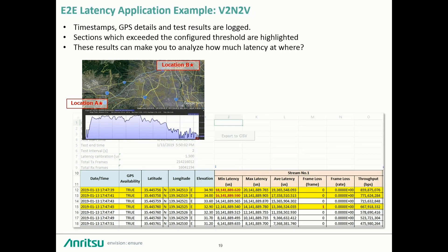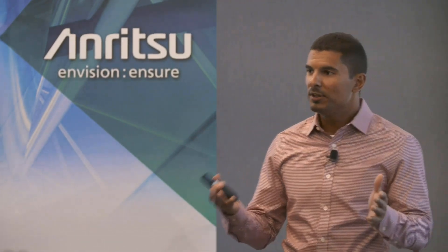As they drove from location A to location B, using our tester we were able to take the GPS latitude and longitude data and correlate that to minimum and maximum latency, frame loss, and throughput while in the vehicle. The result was a Google map showing mostly green with a red spot — identifying in GPS exactly where, while driving, our throughput and latency exceeded the ultra-reliable low-latency communication threshold. We were able to identify the exact geographic location where the vehicle platoon would have failed. A pretty neat application.